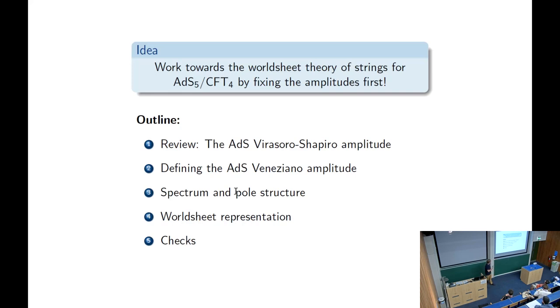My outline is I will give one slide review of the AdS Virasoro-Shapiro amplitude because this is very much a follow-up on this. Then I will tell you how we define the AdS Veneziano amplitude. Then I will talk about the two main ingredients that we need to fix it, which is the pole structure, which depends on the spectrum of exchange operators, and the worldsheet representation. And then finally, when we have our result, we do some checks.